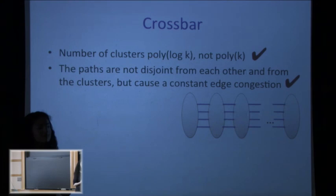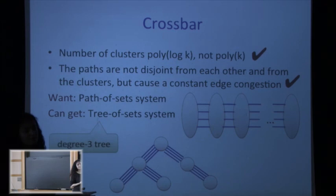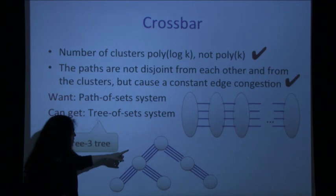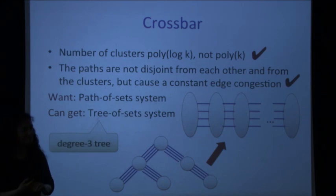There is a third barrier we were stuck on for a very long time. What we need is clusters organized into a path (maximum vertex degree 2), but what this construction gives is clusters organized into a tree with maximum vertex degree at most 3. It feels like we are so close — degree 2 versus degree 3 — but going from a degree-3 tree to a path took us a while to figure out. This part I'm going to show you.